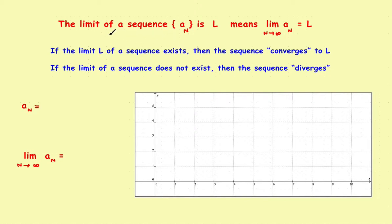Just a reminder: the limit of a sequence is L. All that means is, as you go way off to the right, if the terms of the sequence are approaching some fixed number, then the sequence is said to converge to that number L. If the limit of a sequence exists, the sequence converges to L. If the limit does not exist, the sequence diverges — the terms are not settling in on a fixed number.